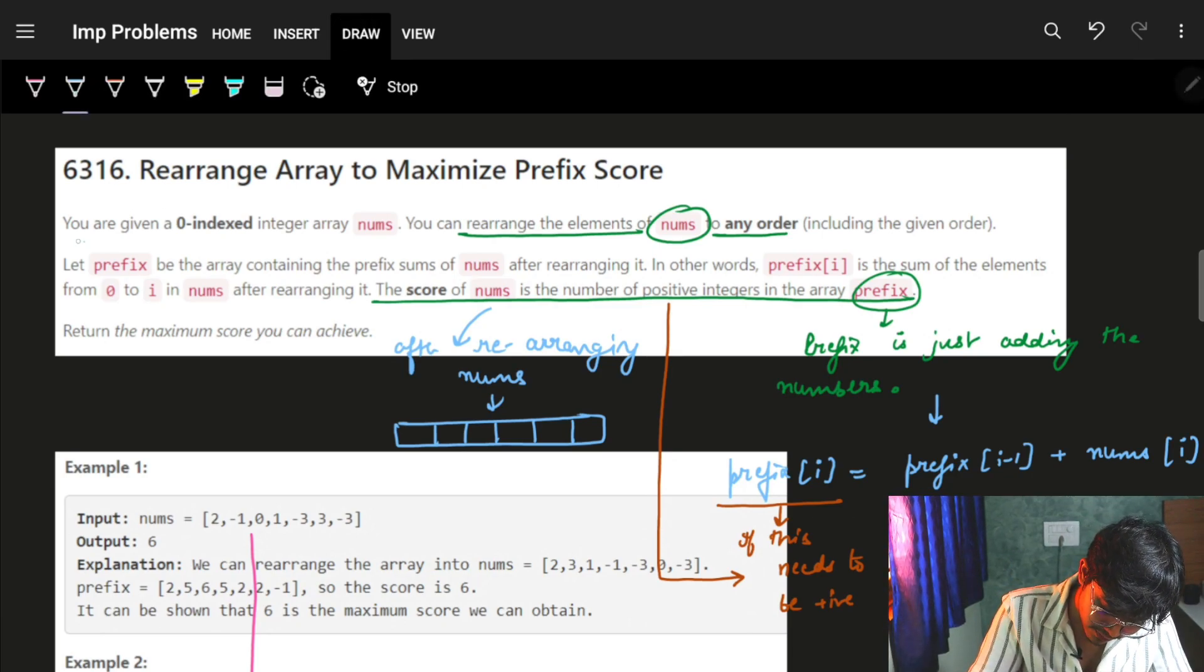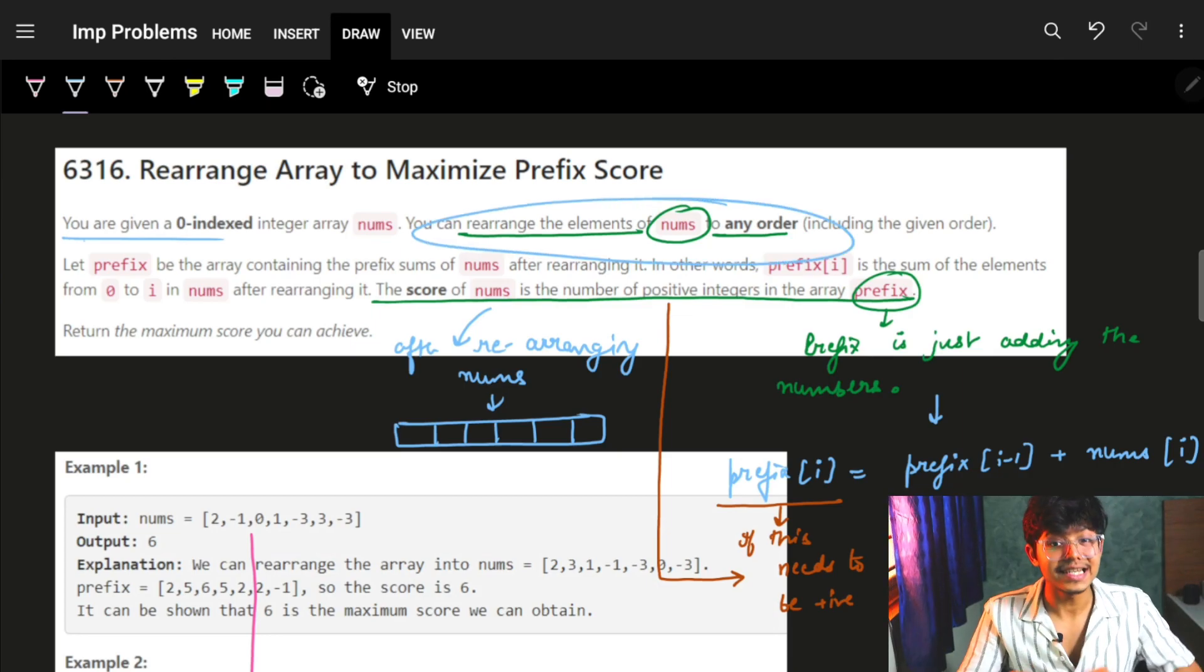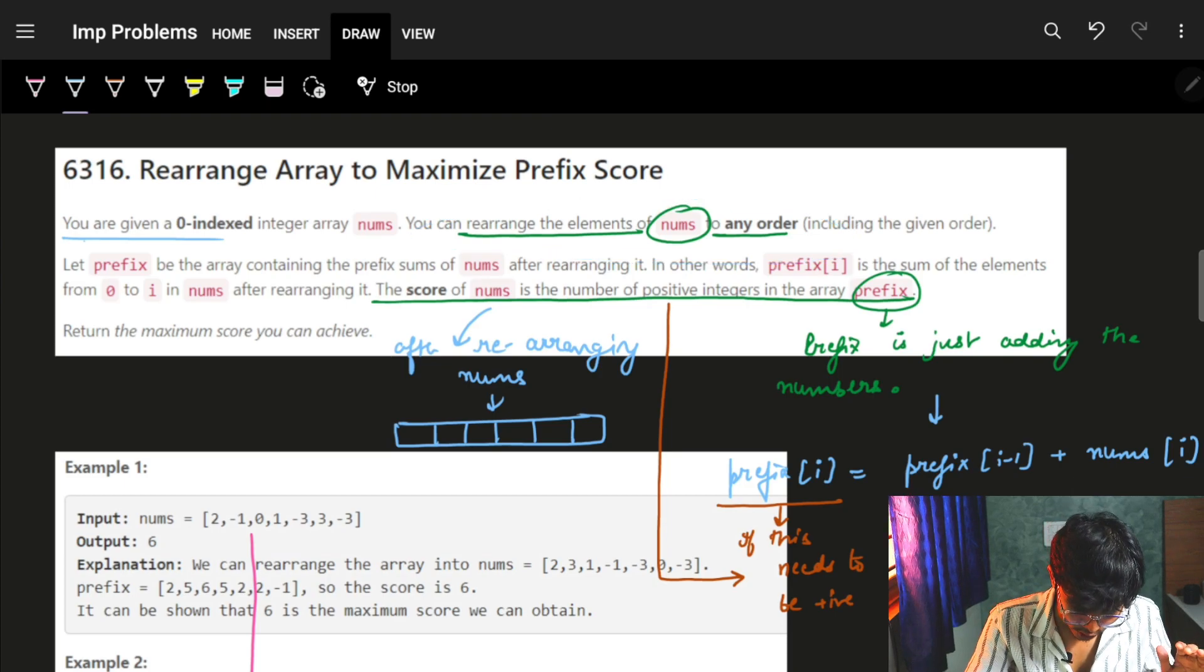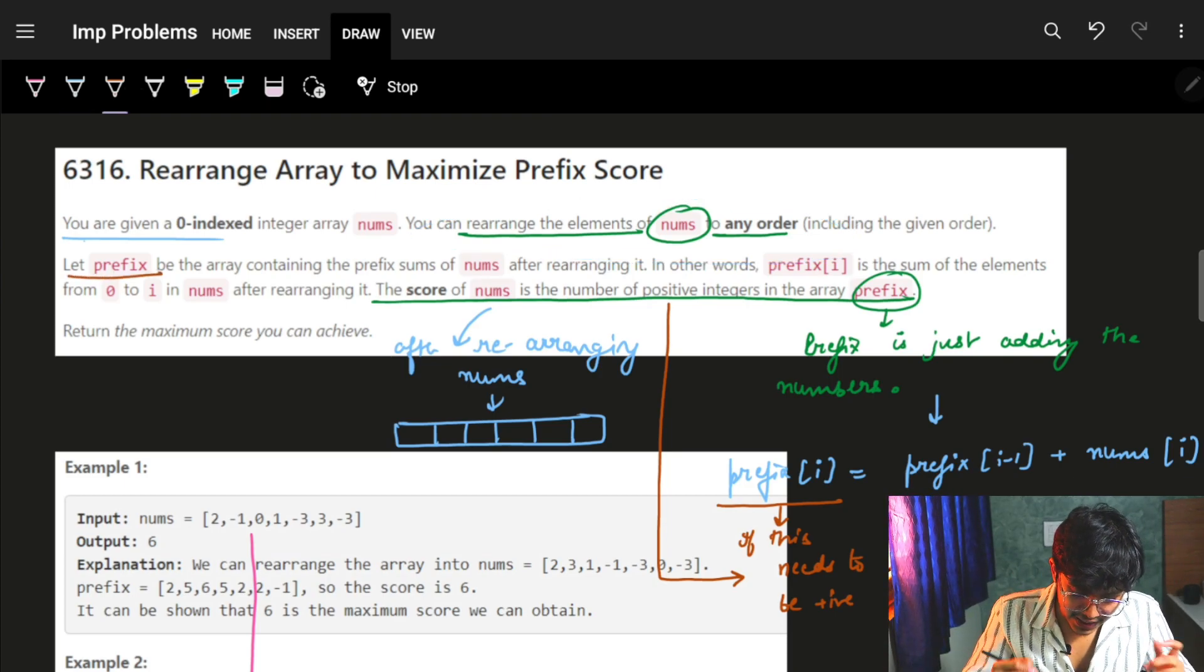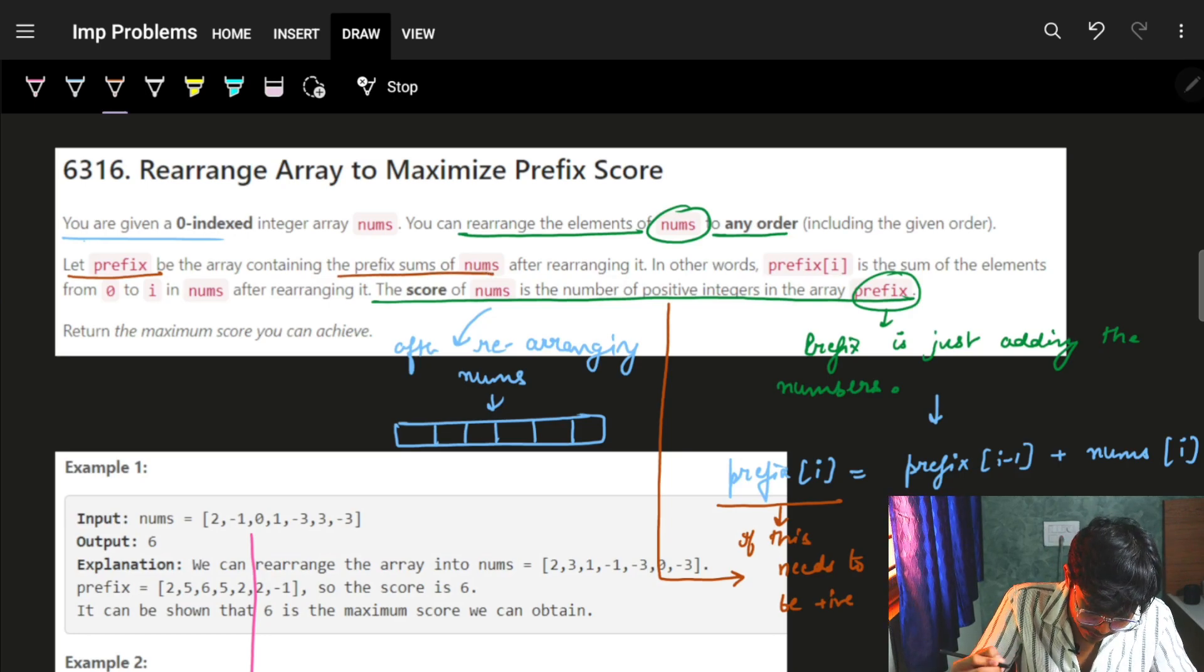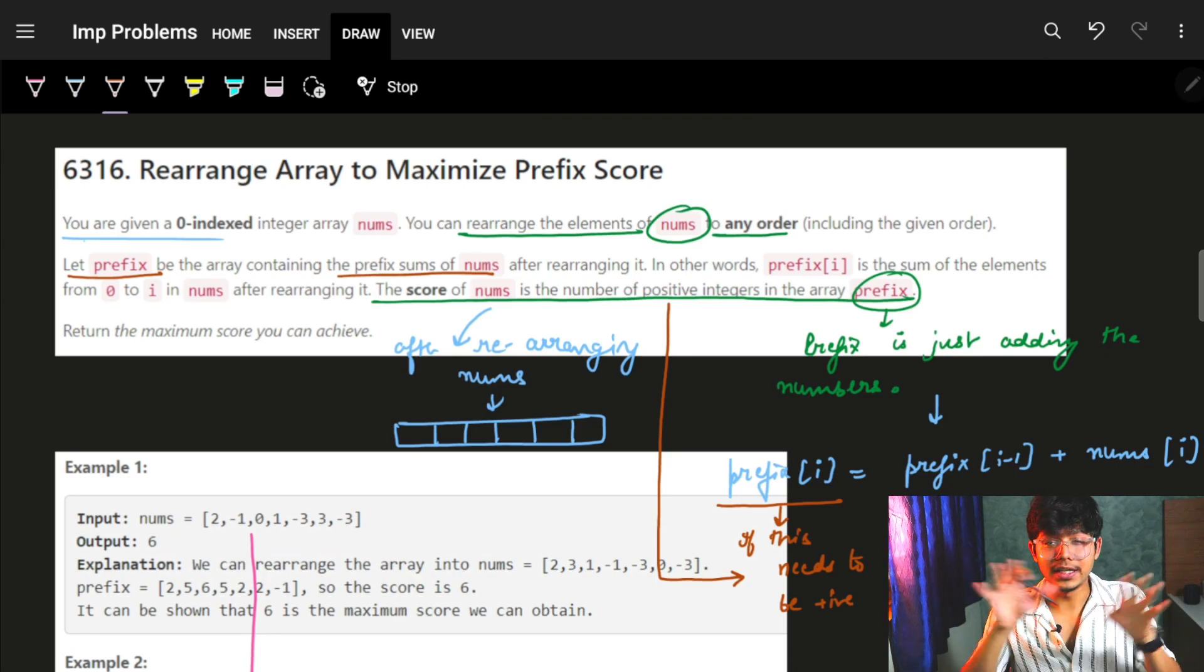The problem says that we are given a zero-indexed integer array called nums. You have to rearrange the elements of nums in any order we want.